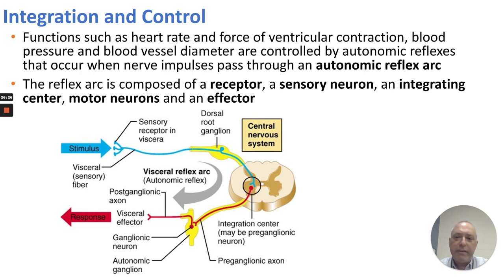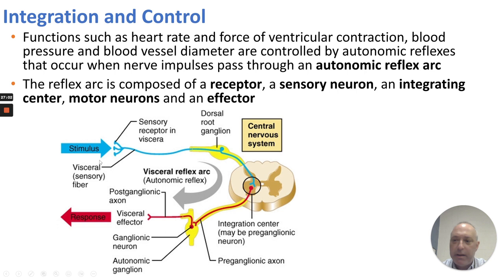Integration and control: functions such as heart rate, force of ventricular contraction, blood pressure, and blood vessel constriction or dilation all pass through an autonomic reflex arc. The reflex arc is composed of a receptor, a stimulus that activates the receptor, a sensory neuron, an integration center, then a motor neuron, and an effector. The sensor connects through the preganglionic neuron, going through the dorsal root ganglion, synapsing in the central nervous system, and then axons go out to their effectors.